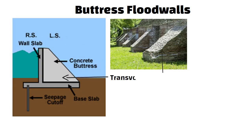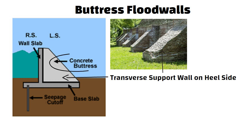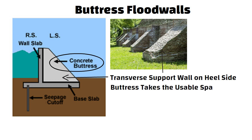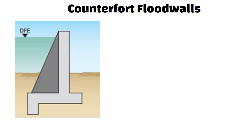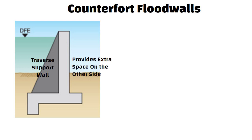Buttress flood walls consist of a transverse support wall on the hillside. The concrete buttress is located on the opposite side of the retaining water. Generally it is not used as the buttress takes up usable space. Counterfort flood walls consist of a transverse support wall on the side of the retaining water. As the supporting walls are hidden under water or soil, it provides extra space on the other side. That is why it is used widely as compared to buttress walls.